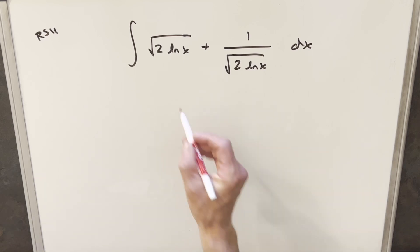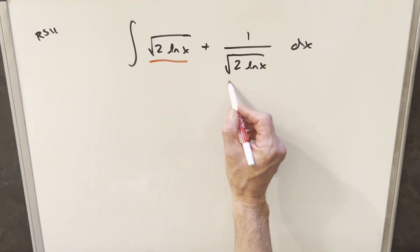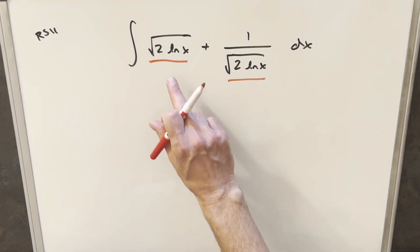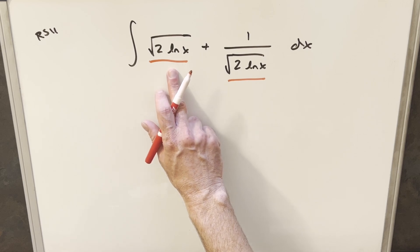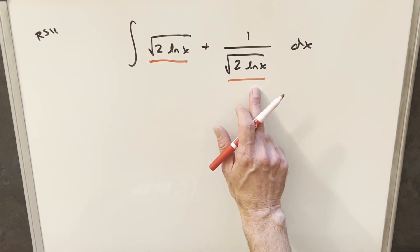The first thing that jumps out to me is that this and this is exactly the same. But more importantly, I think if we took the derivative of this first radical, we'd end up with something very similar to this over here on the right.